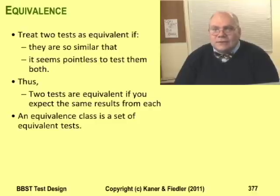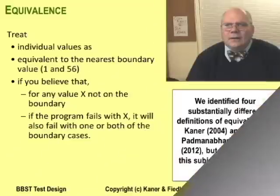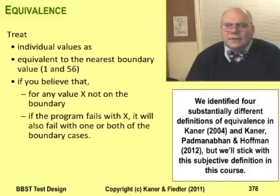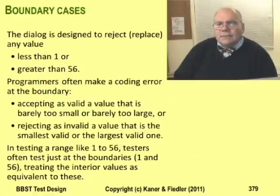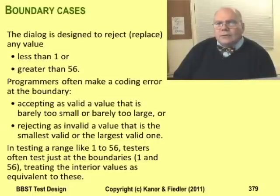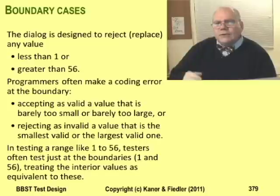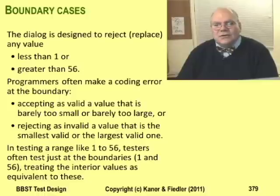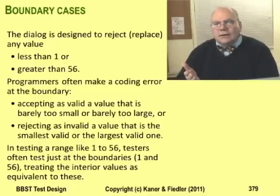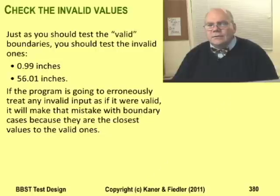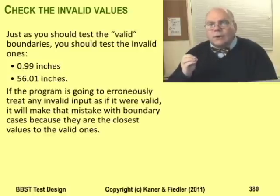One of the key sampling heuristics in domain testing is equivalence. If two values are similar enough, only test one of them. Applying this to the page setup dialog, domain testers would typically treat every value from 1 to 56 as equivalent. Another key sampling heuristic is testing at the boundaries. If 1 and 56 are the smallest and largest possible values, test with those. One reason we treat boundaries as special is that programmers often make coding errors right at the boundary — they might treat a value as good even though it's barely outside, or treat a value as bad even though it's barely within. Another challenge is that designers can misunderstand the real world and misspecify the boundaries. Along with testing values in the domain, you should test values that don't belong — that are outside. The program should reject these as errors, but gracefully. PowerPoint rejects them by changing them — for example, it changes .99 inches to 1 inch.